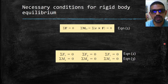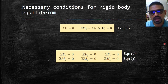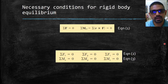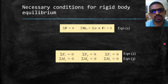These equations can be used to determine unknown forces applied to the rigid body or unknown reactions exerted on it by its supports. The first set of equations expresses the fact that the components of the external force in the x, y, and z directions are balanced.